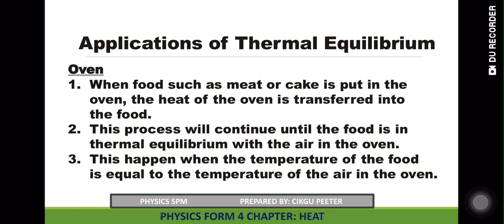Where do we apply thermal equilibrium? It happens around us — for example, when we bake a cake and place the cake flour in the oven. As the temperature of the oven increases, the temperature of the flour increases, and the temperature of the cake and the oven will become equal, because that's how thermal equilibrium is achieved.